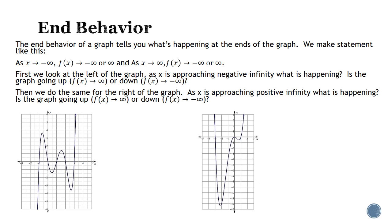The end behavior tells you what's happening at the ends of the graph. You always say the same thing: as x approaches negative infinity, f of x is approaching something — either negative or positive infinity. As x is approaching positive infinity, f of x is approaching either negative or positive infinity.